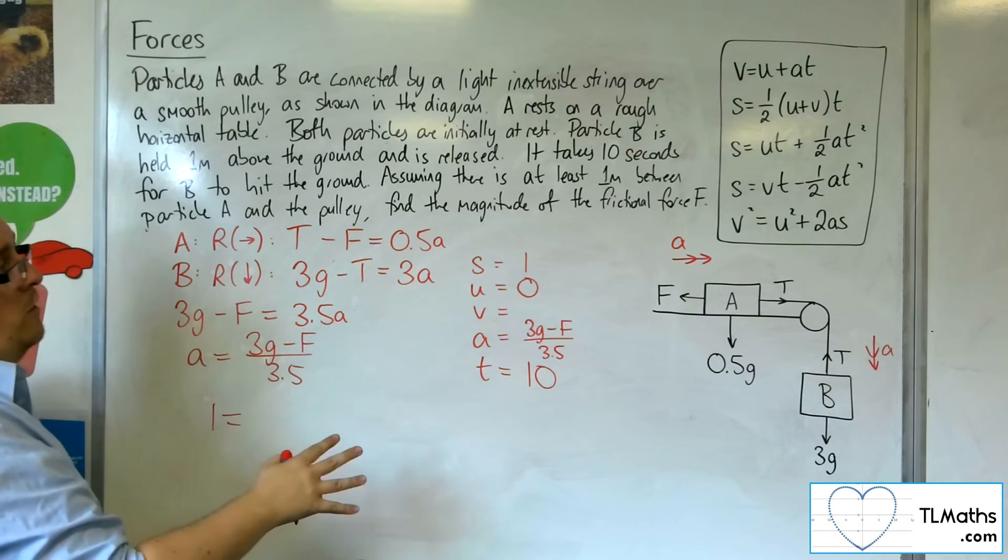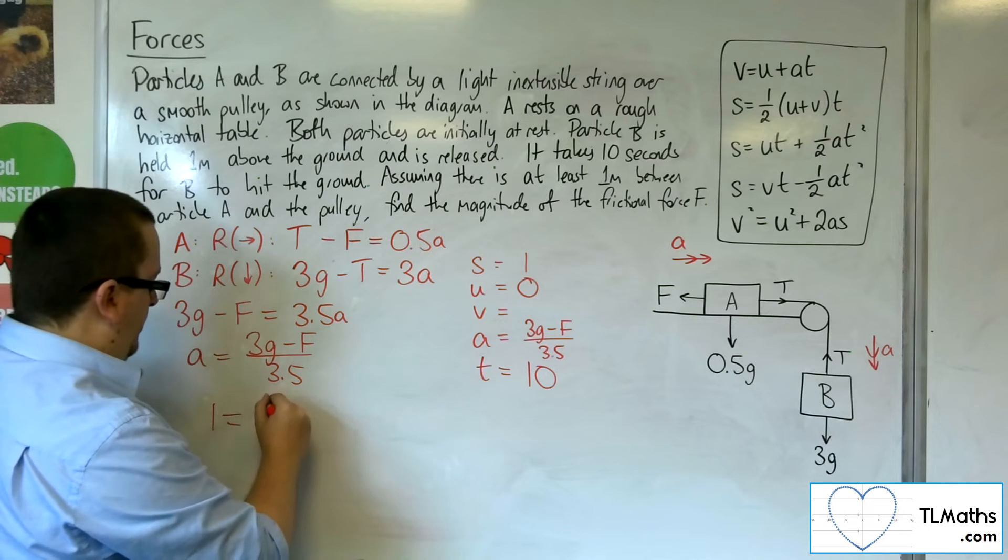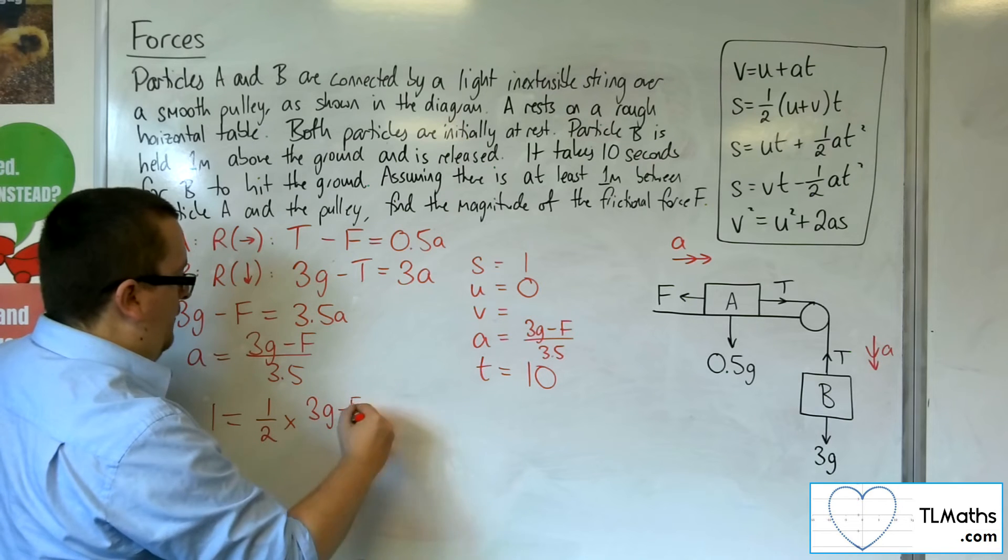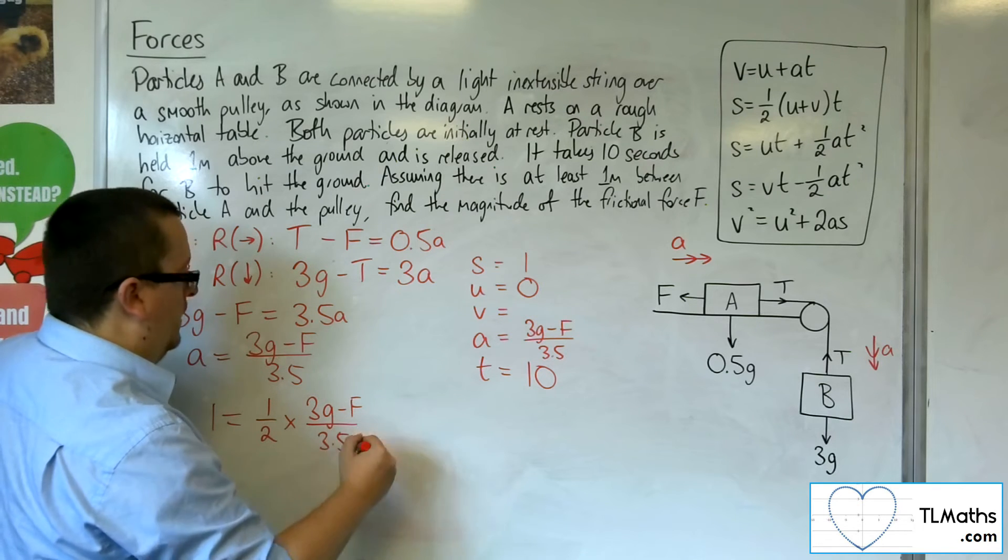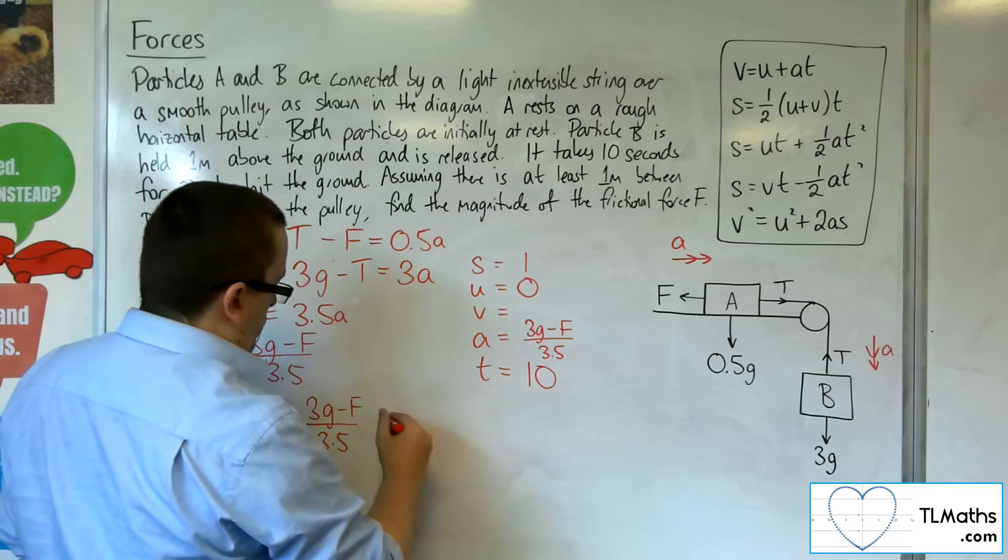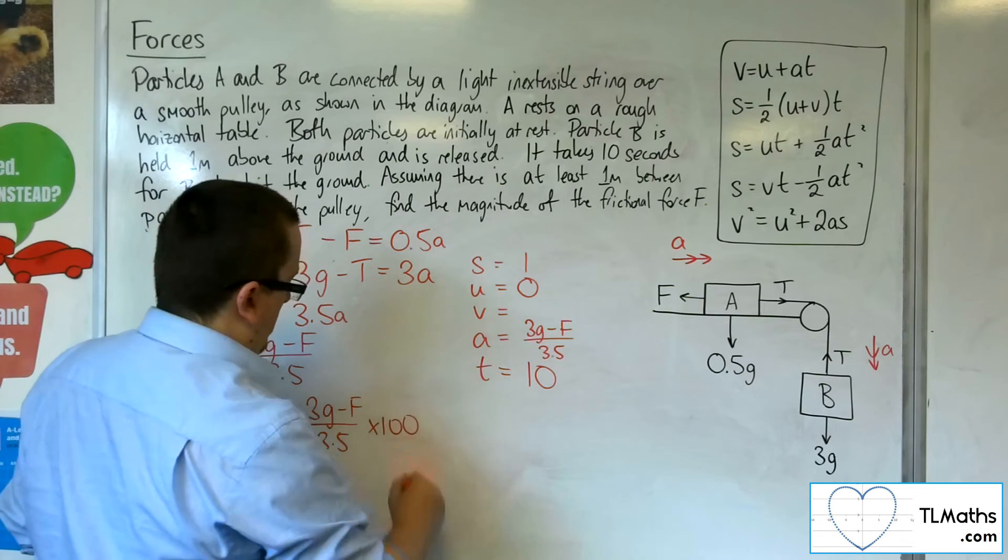So, S is 1, and that's got to be equal to U times T, so 0 times 10, so 0, plus 1 half, times A, which is the 3G minus F over 3.5, times by T squared, which is 100.